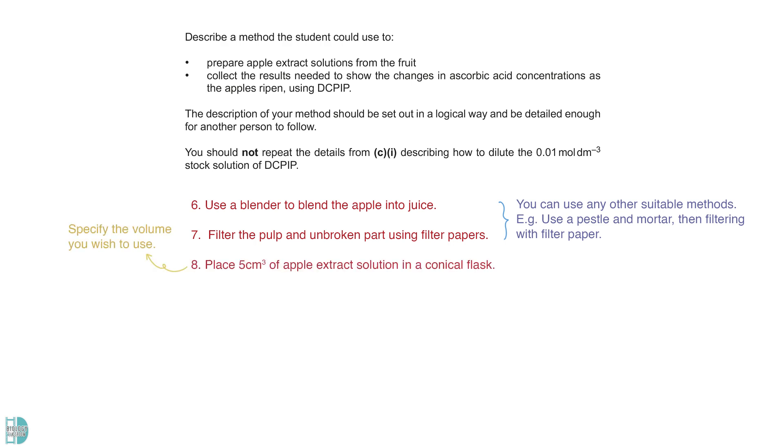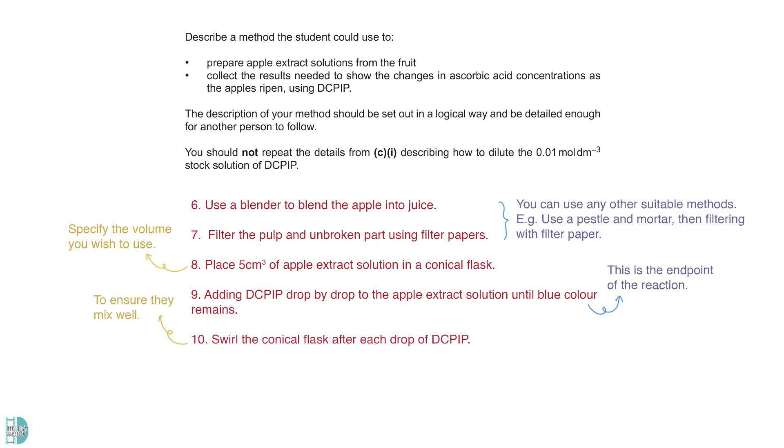A fixed volume of apple extract solution is placed in a conical flask. The DCPIP is added drop by drop to the apple extract solution until the blue color remains. This is the endpoint of the reaction. After each drop, swirl the conical flask to ensure the solutions mix well.